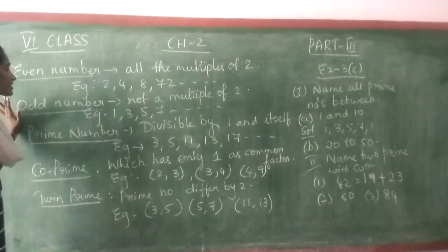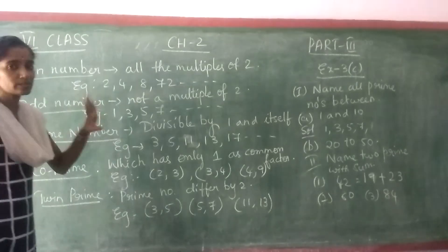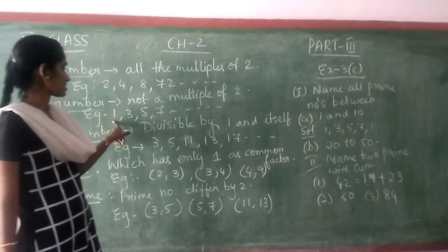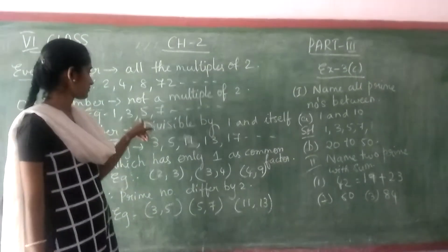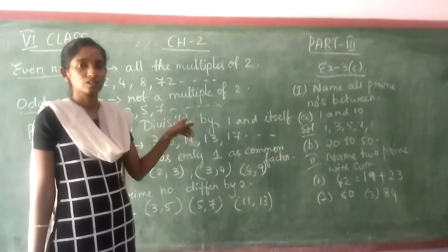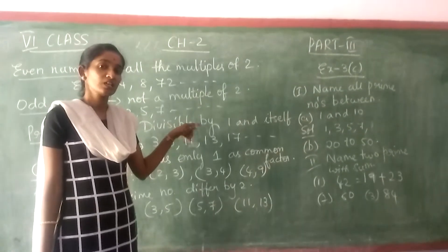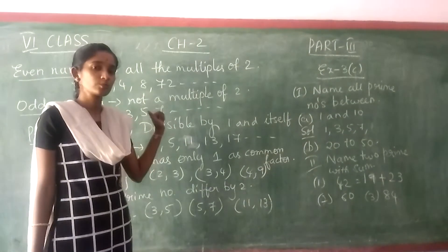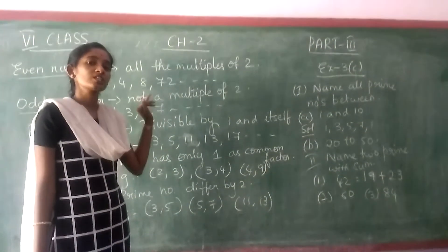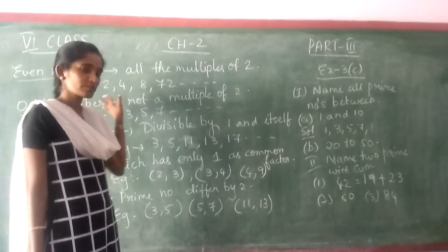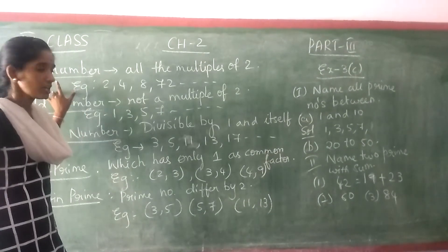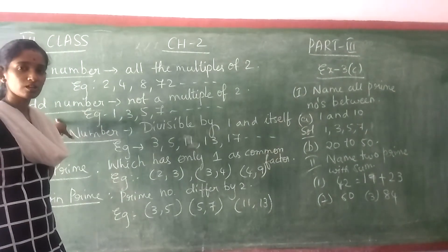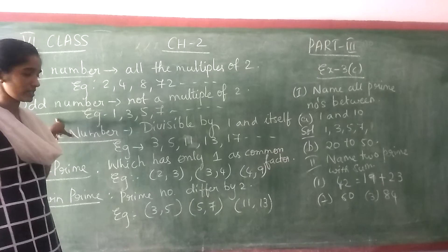And so on. Numbers which are not a multiple of 2 — see like this: 1, 3, 5, 7, 11, 13, 17. These are all not the multiples of 2. So which are multiples of 2, we call them even numbers. Which are not multiples of 2, we call them odd numbers.